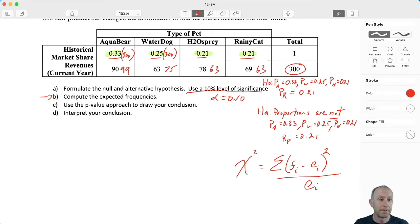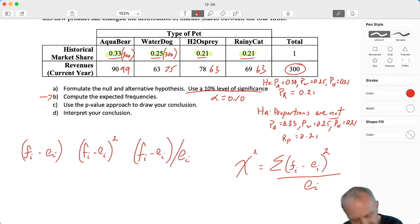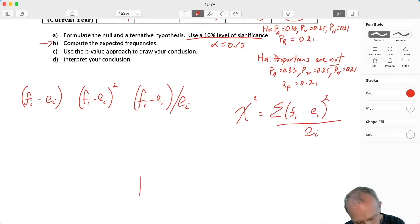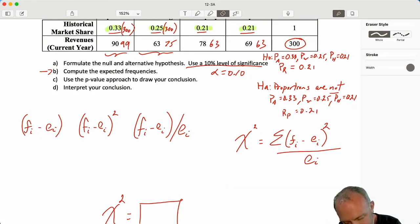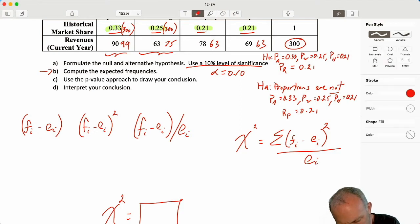I'm looking at my observed frequencies, my expected, then we square those differences, then we divide those differences by that expected value, then we add those up, and that gives us our upper tail chi-squared test statistic. So now I'm looking at the differences between these values. So we start with 90 minus 99 is minus 9. That's squared is 81. 81 divided by our expected value of 99 gives me 0.818.